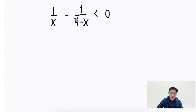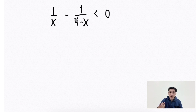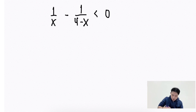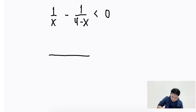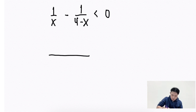We can't subtract 1 over x minus 1 over 4 minus x because they have different denominators — they are dissimilar fractions. To find a common denominator, let's get the LCD. The LCD of this given problem is x times the quantity of 4 minus x.